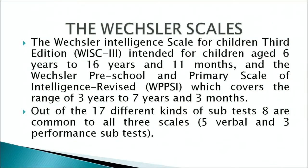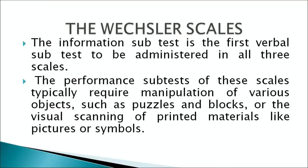Out of 17 different kinds of subtests, 8 are common to all 3 scales — that is, 5 verbal and 3 performance tests are common across the different versions of the Wechsler Scales. The information subtest is the first verbal subtest administered in all 3 scales. The performance subtests typically require manipulation of various objects such as puzzles or blocks, or the visual scanning of printed material like pictures or symbols.